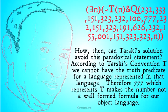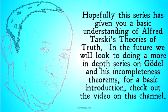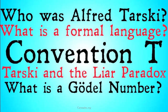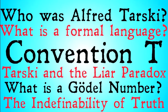How, then, can Tarski's solution avoid this paradoxical statement? According to Tarski's Convention T, we can't have a truth predicate for a language represented in that language. Therefore, 777, which represents T — our truth predicate attempting to predicate over our Gödel number language — makes the number not a well-formed formula for our object language. Hopefully this series has given you a basic understanding of Alfred Tarski's theories of truth. In the future, we will look to doing a more in-depth series on Gödel and his incompleteness theorems. For a basic introduction, check out the video on Gödel's incompleteness theorems here on this channel.